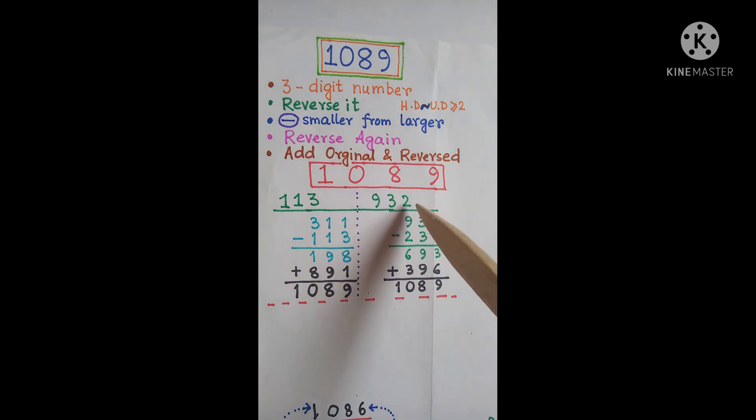Here is our second example. For the second example consider 932. When reversed we will get 239. Obviously 932 is the bigger number. 239 is the smaller number. Take the difference. We will get 693.